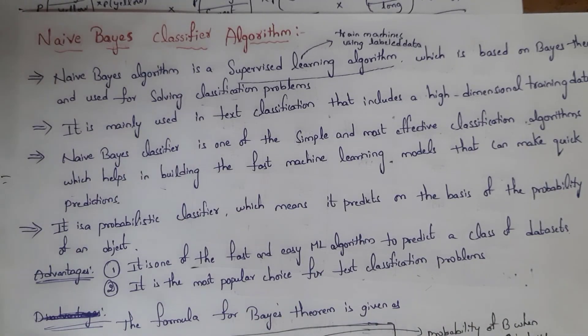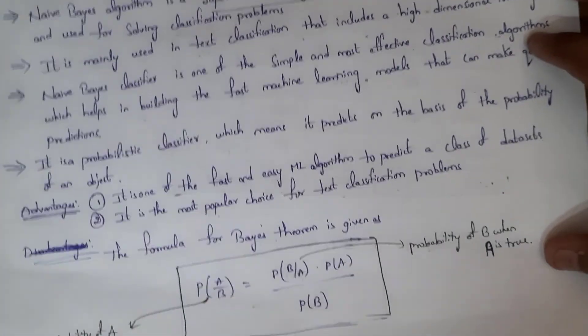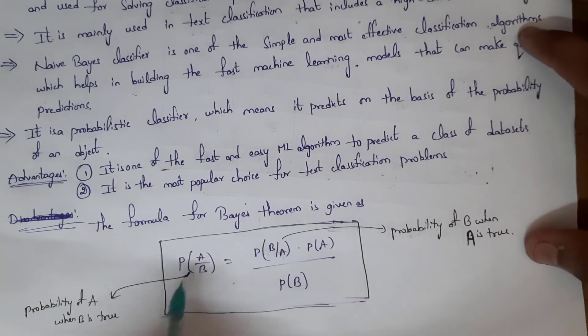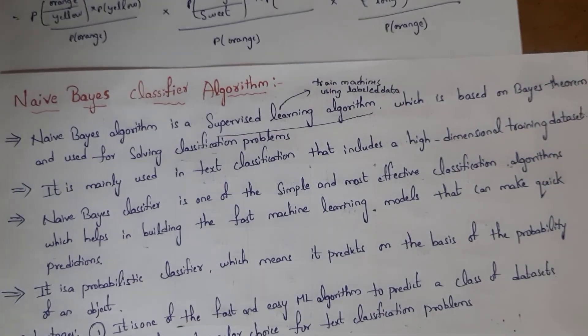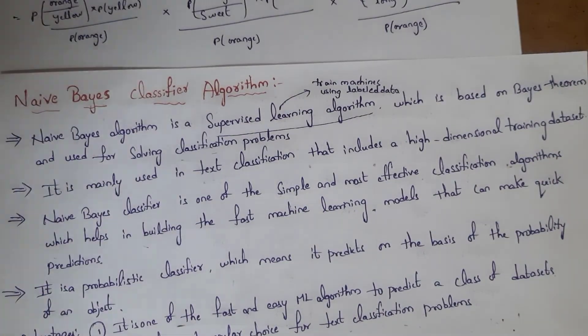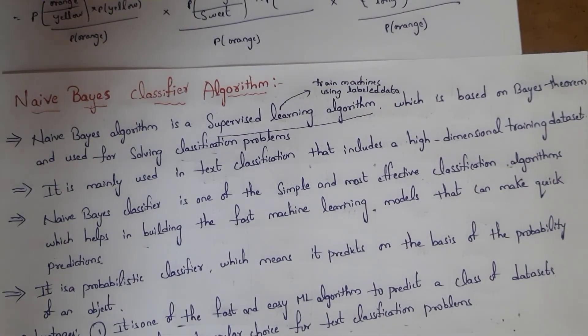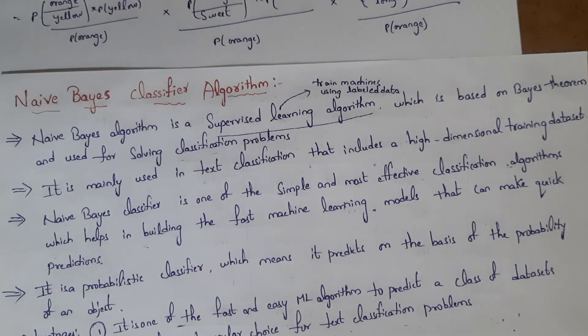If a Bayesian classification problem comes in an exam, you need to write the Bayes' theorem formula and then solve using the Naive Bayes classifier approach. Note that Bayesian classification methods are classified into two types: one is Bayes' theorem and the other is the Naive Bayes classifier.